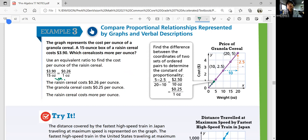So that's 0.26, that's 0.25. You have these points. 10, 2.5 means you have $10 per 2.5 ounces. So that's 0.25 per ounce. So the raisin cereal costs more per ounce, this one.